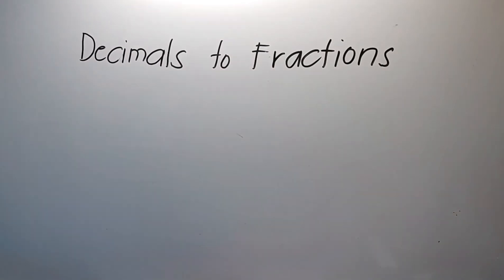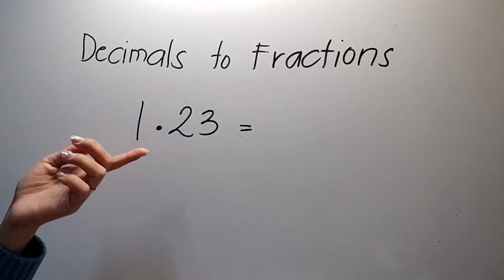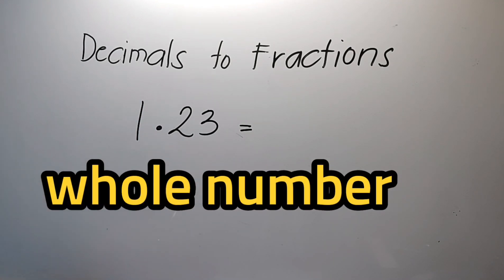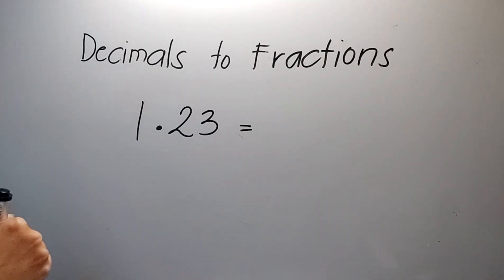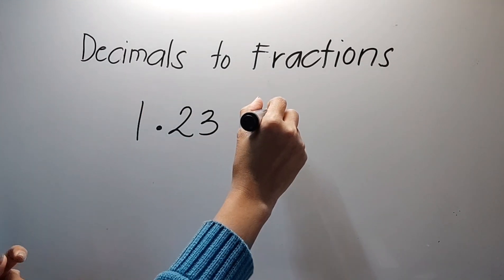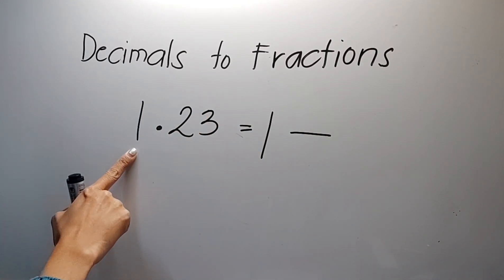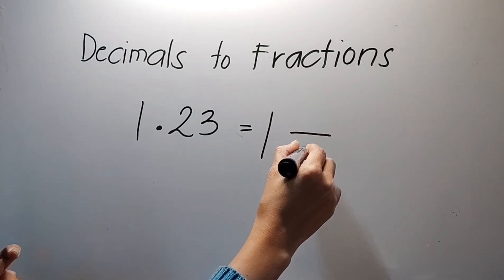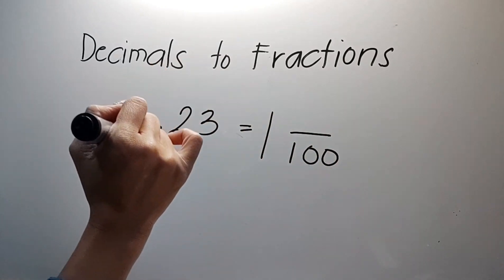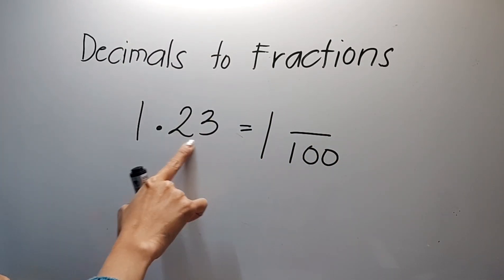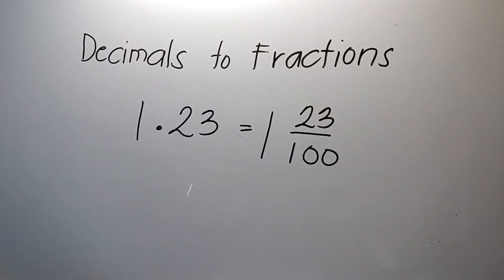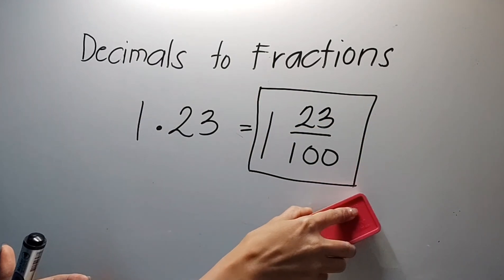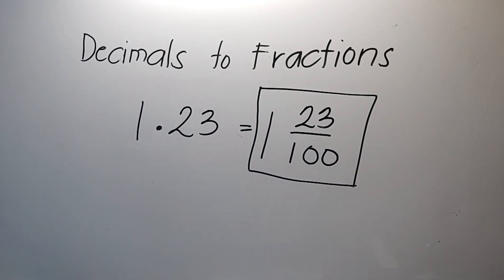Paano pagka ganito? Ito dito sa part na to ay placeholder ng whole number. So ibig sabihin ito ay isang mixed number — ito ay whole number. Kinopya ko lang. And then bilangin kong ilang places after ng decimal point — one, two. And then write one and copy. Ito yung sagot.